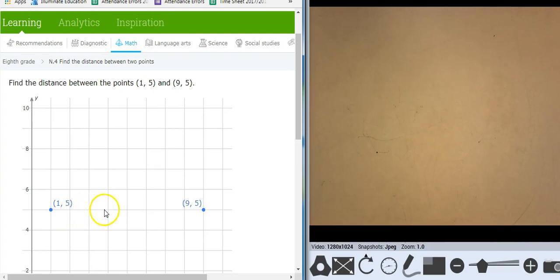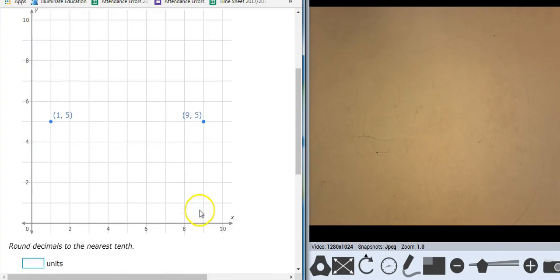Horizontal, so 1, 2, 3, 4, 5, 6, 7, 8 units.